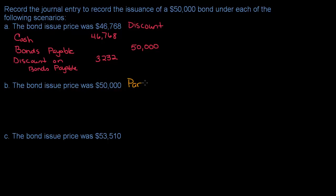Par is actually really easy because we're getting cash in exchange for bonds payable. How much cash is the company receiving? $50,000. How much is the liability? $50,000. So that one's actually really easy.